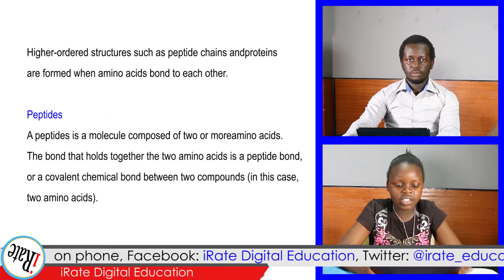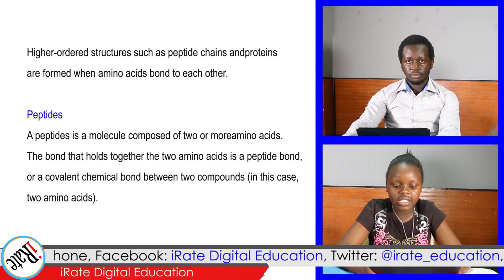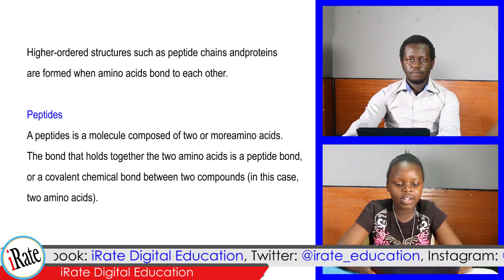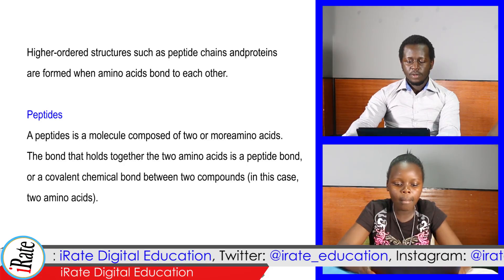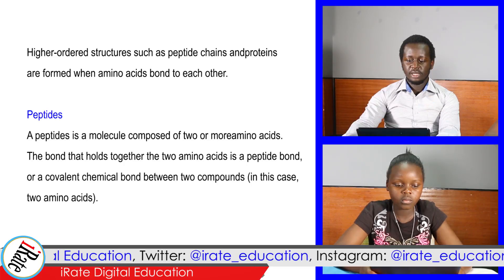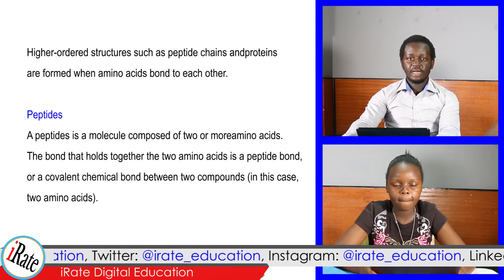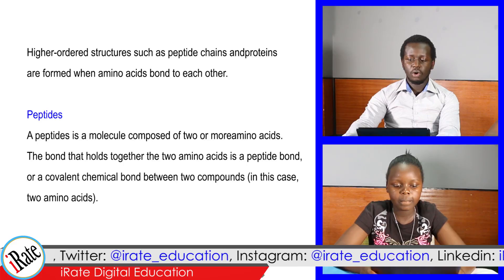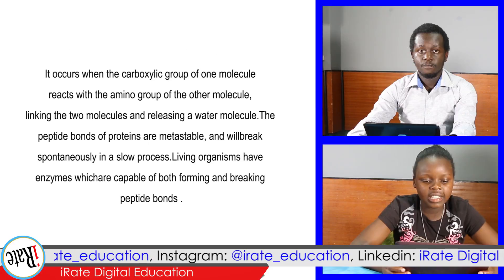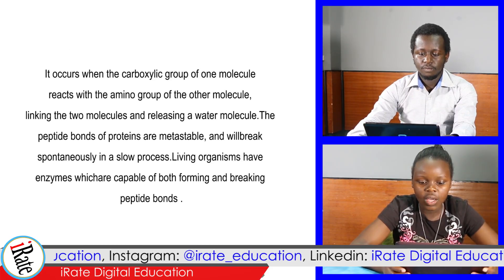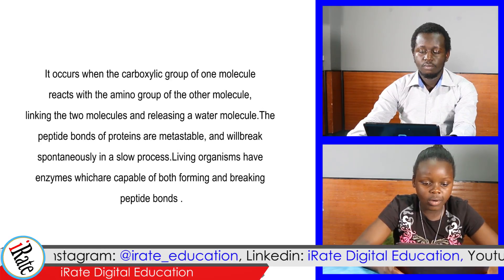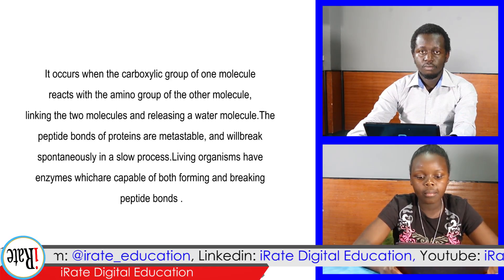Higher ordered structures such as peptide chains and proteins are formed when amino acids bond to each other. A peptide is a molecule composed of two or more amino acids. The bond that holds together the two amino acids is the peptide bond — a covalent chemical bond between two compounds. It occurs when the carboxylic group of one molecule reacts with the amino group of the other molecule, linking the two molecules and releasing a water molecule.